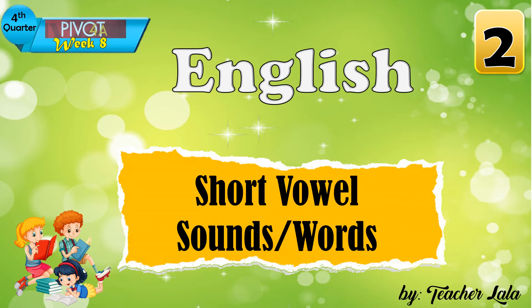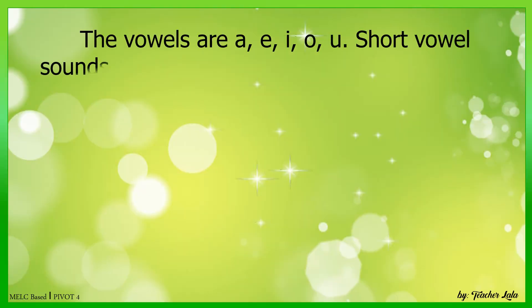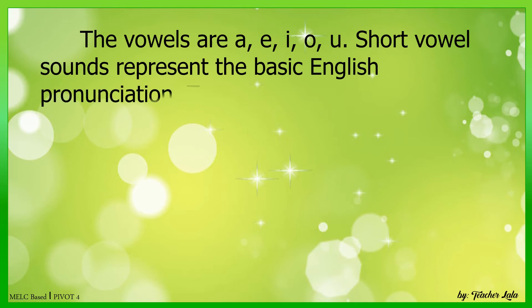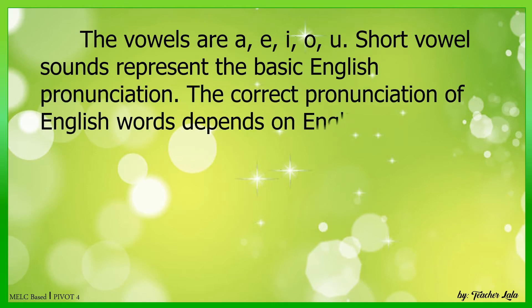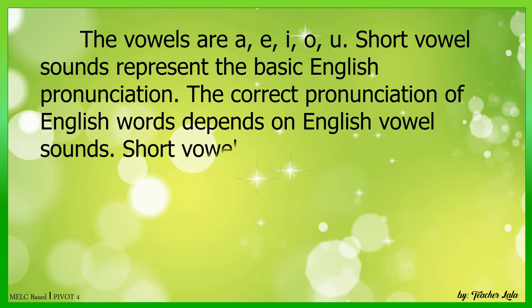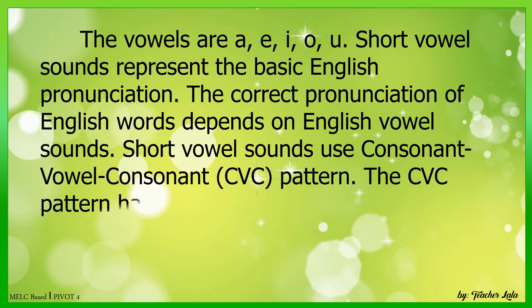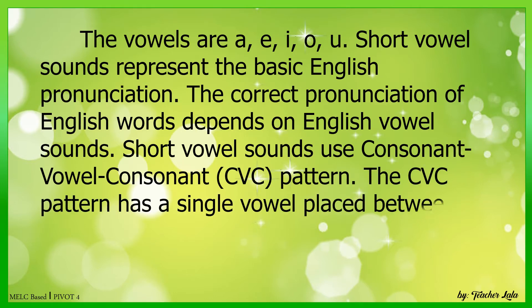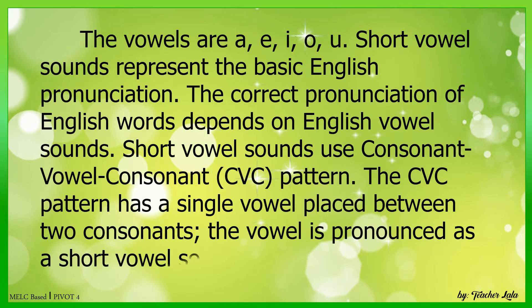Our topic today is about short vowel sounds or words. The vowels are A, E, I, O, U. Short vowel sounds represent the basic English pronunciation. The correct pronunciation of English words depends on English vowel sounds. Short vowel sounds use the consonant-vowel-consonant, or CVC pattern. The CVC pattern has a single vowel placed between two consonants, and the vowel is pronounced as a short vowel sound.